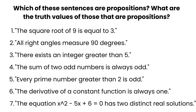Number five, what do you think? Every prime number greater than two is odd — that's true. Number six: the derivative of a constant function is always one. Derivative of a constant function is always one — is it true or false? Think about it. Okay, number seven: the equation x squared minus five x plus six equals zero has two distinct linear solutions.